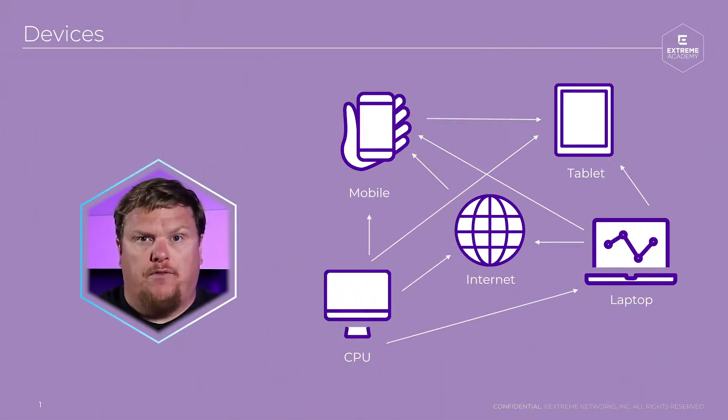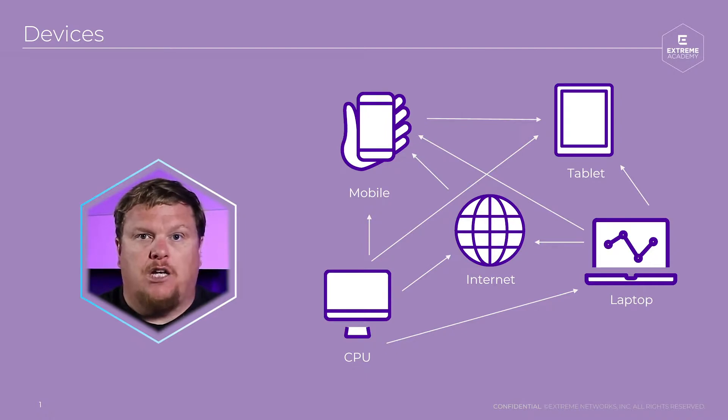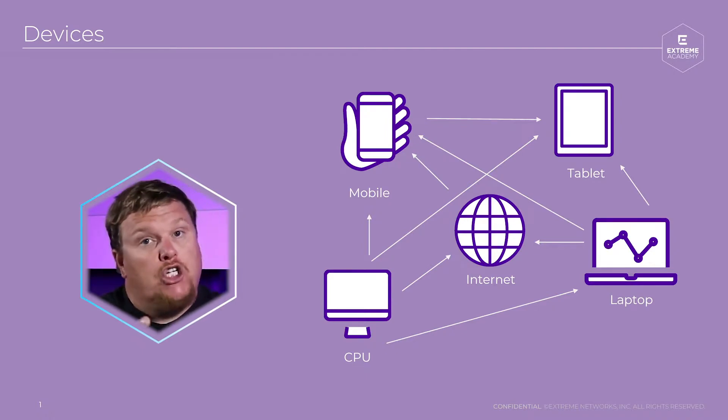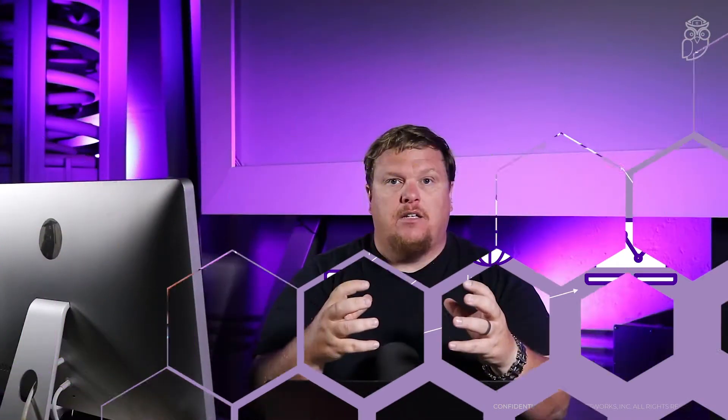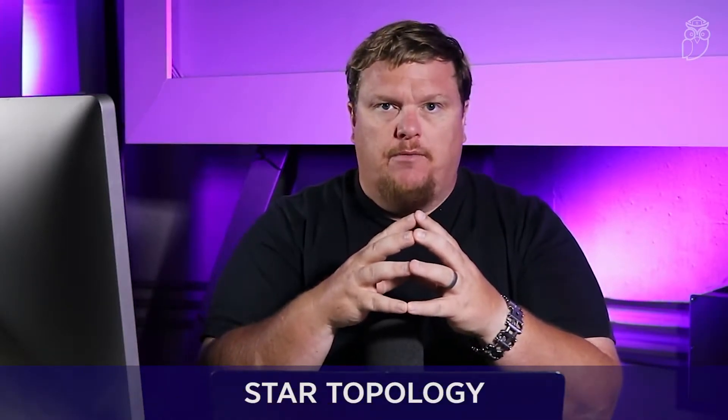How are my devices connected to each other? There's actually a little bit of a shape to it. All of the devices we've talked about — from your phone to your laptop, to the internet, to all devices connected together — they connect in what are called different topologies. Here's the easiest one to understand to start: a star topology.